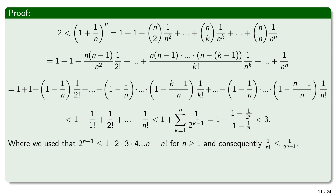Since 2^(n−1) ≤ n!, taking reciprocals gives 1/n! ≤ 1/2^(n−1). So each term in the sum of 1/k! can be replaced by 1/2^(k−1), bounding the sum by the geometric series we already computed. Therefore this sequence is not bigger than 3 for every n, proving it is bounded above.